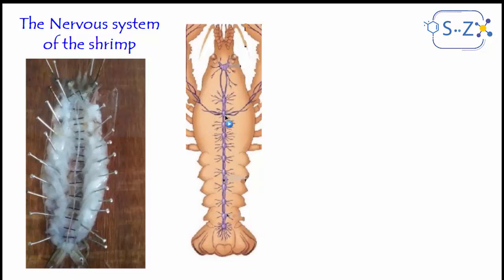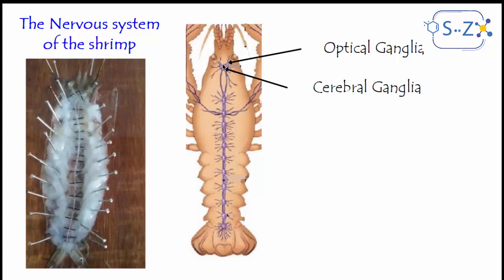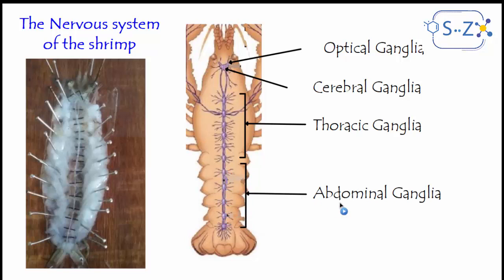Each ganglion has a certain name according to its position. For example, this ganglion is called the optical ganglia because it is connected to the eyes. Then we have the cerebral ganglia, which is just like the brain in invertebrates. Here, a group of ganglia together are called the thoracic ganglia because they are located in the thorax of the crustacean. Then we have another group called the abdominal ganglia because they are located in the abdomen of the shrimp. The ganglia here act just like the central nervous system of vertebrates — like the brain and spinal cord — and the extensions act just like the nerves of vertebrates.